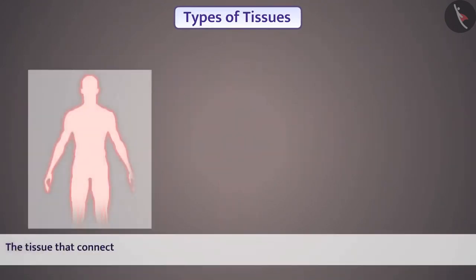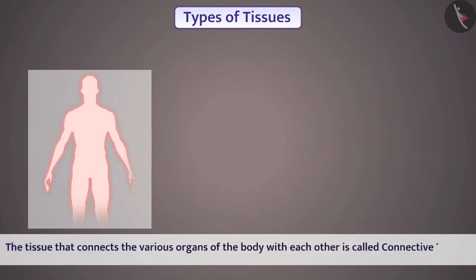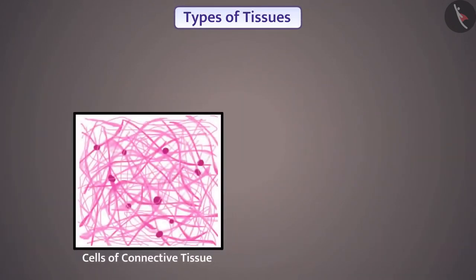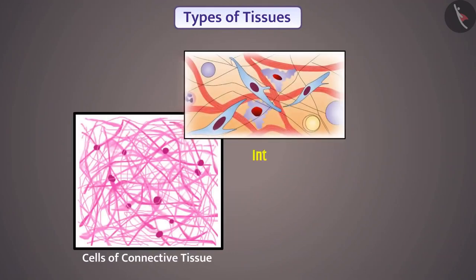The tissue that connects the various organs of the body with each other is called connective tissue. That's why blood and bones are types of connective tissue. The cells of the connective tissue are loosely packed and are embedded in an intercellular matrix. This matrix may be fluid, jelly-like, dense or rigid. The nature of the matrix varies according to the function of the particular connective tissue.